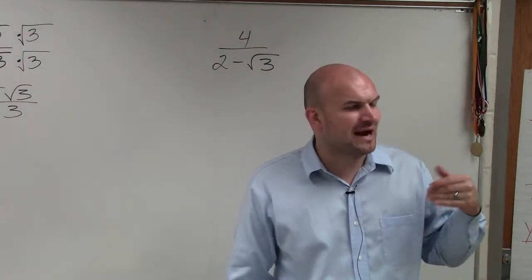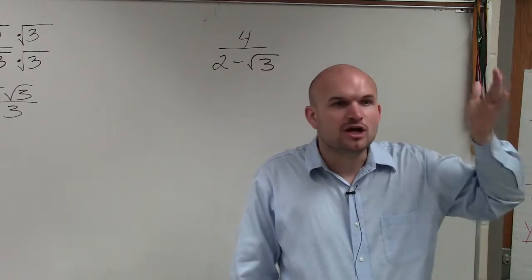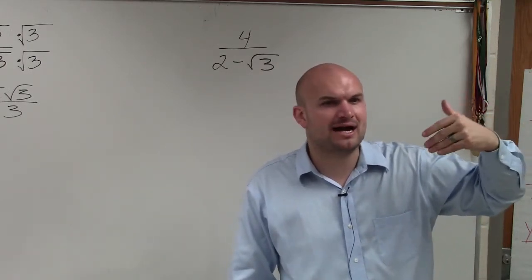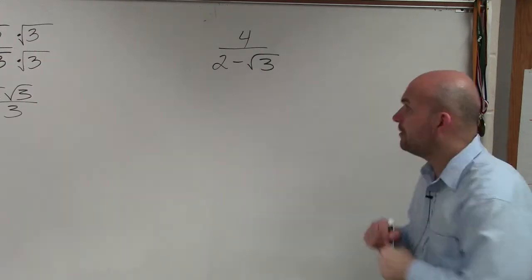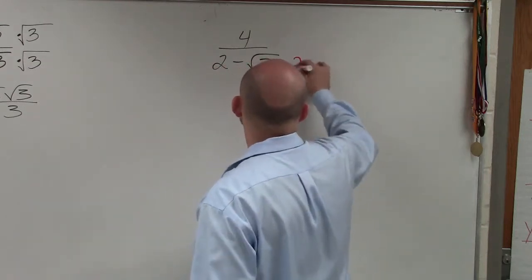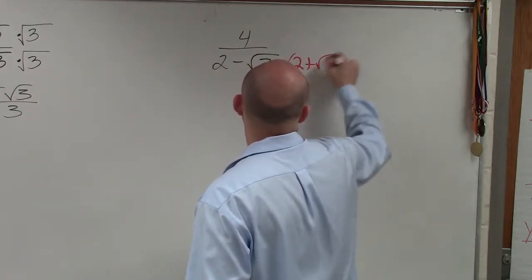If you remember, when we were doing binomial expressions with imaginary numbers, you can't just multiply by i. What you have to multiply by is the conjugate. So I'm going to multiply by 2 plus the square root of 3.